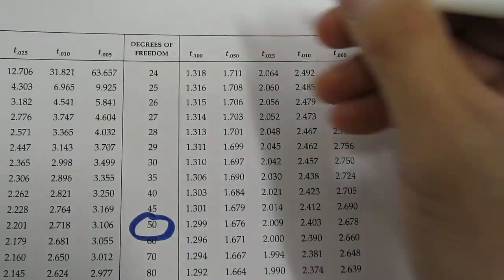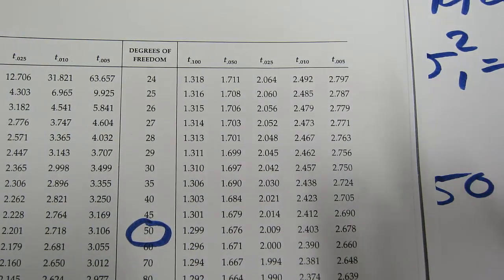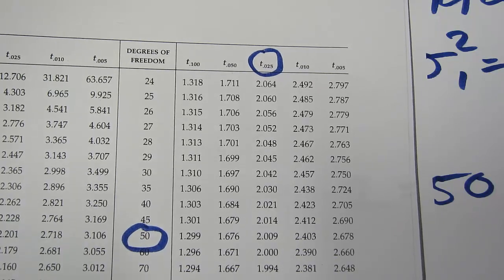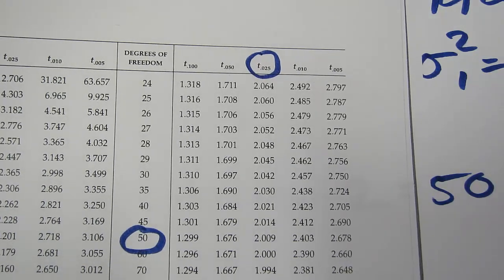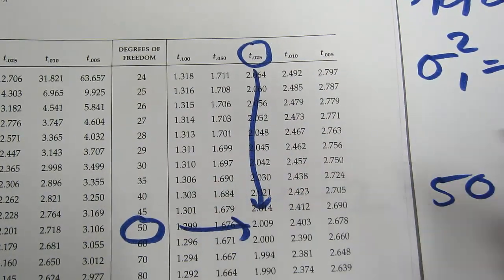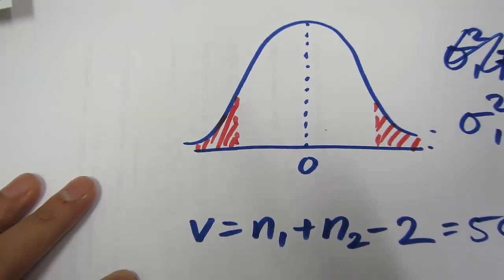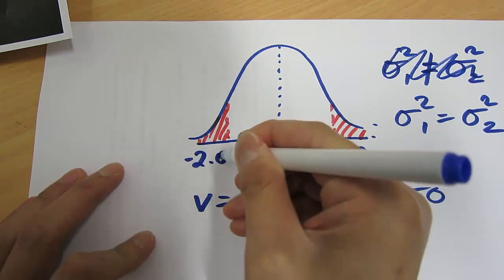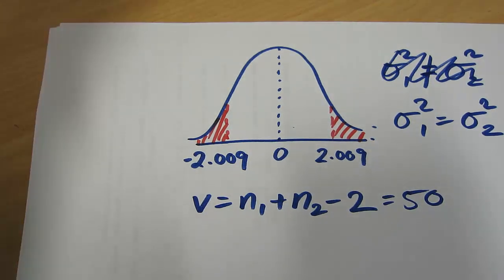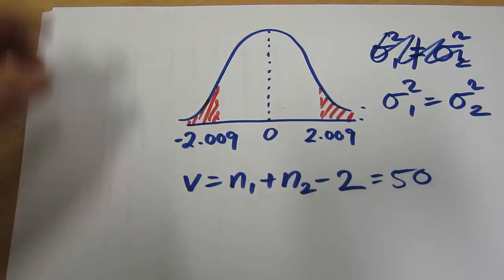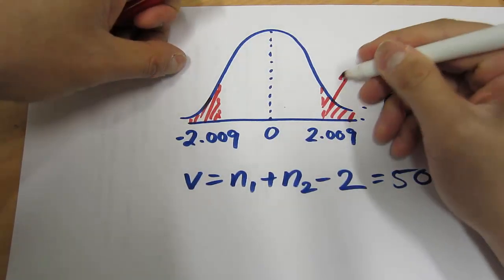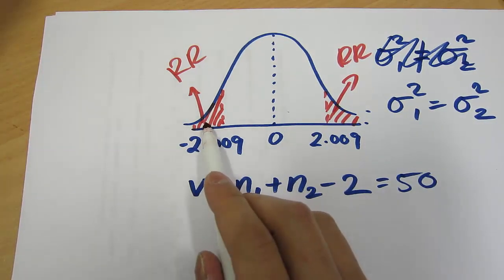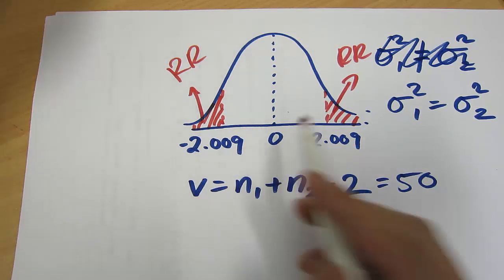Suppose we're testing at the 5% significance level. For a two-tailed test, the rejection region each contains 2.5% — that's the significance level of 5% divided by 2. With 50 degrees of freedom, we get a critical value of 2.009. Because it's symmetrical around zero, the other cutoff must be negative 2.009. If our t-statistic lies in the rejection region, we reject the null hypothesis. If it lies outside the rejection region, we don't reject the null hypothesis.